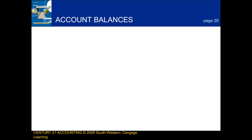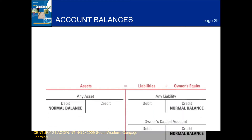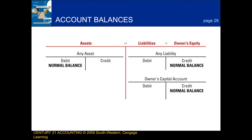Next we're going to be talking about account balances. For any asset account, it will have a normal debit balance. For any liability account, it will have a normal credit balance. And for any owner's capital account, it will also have a normal credit balance.